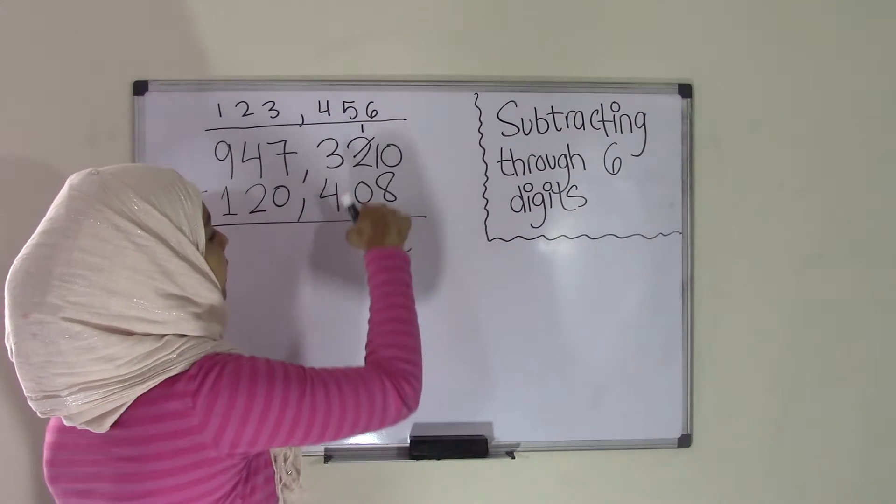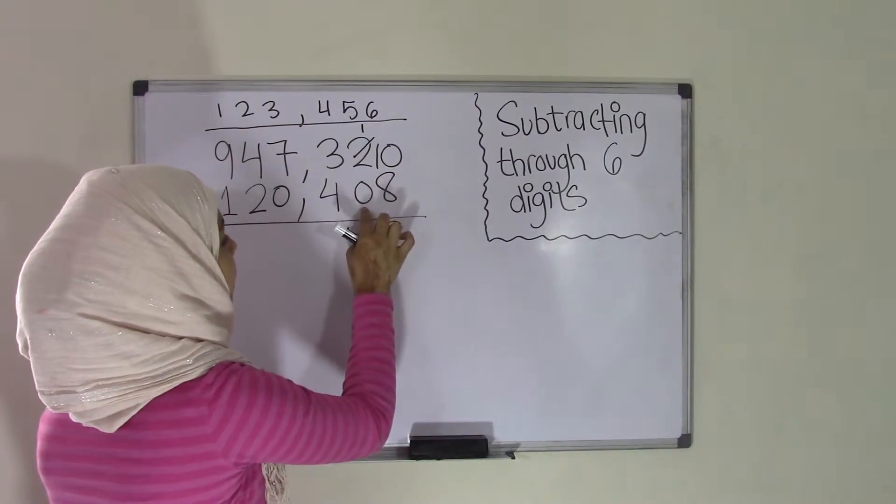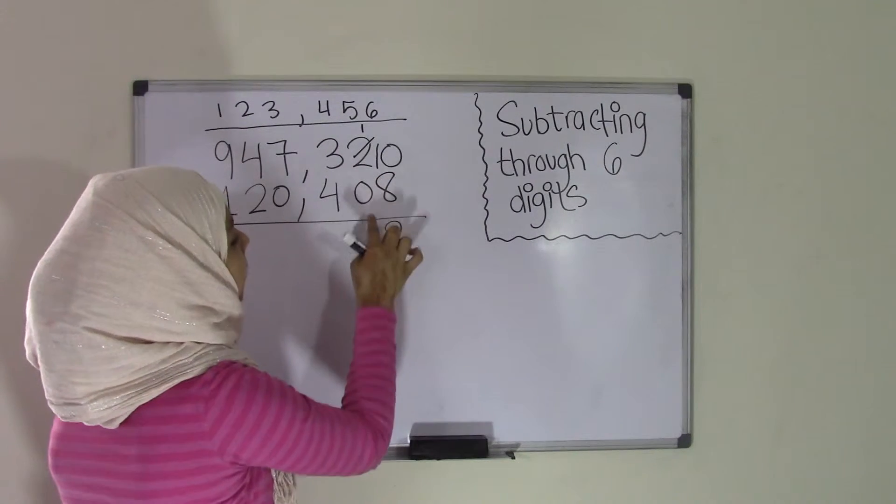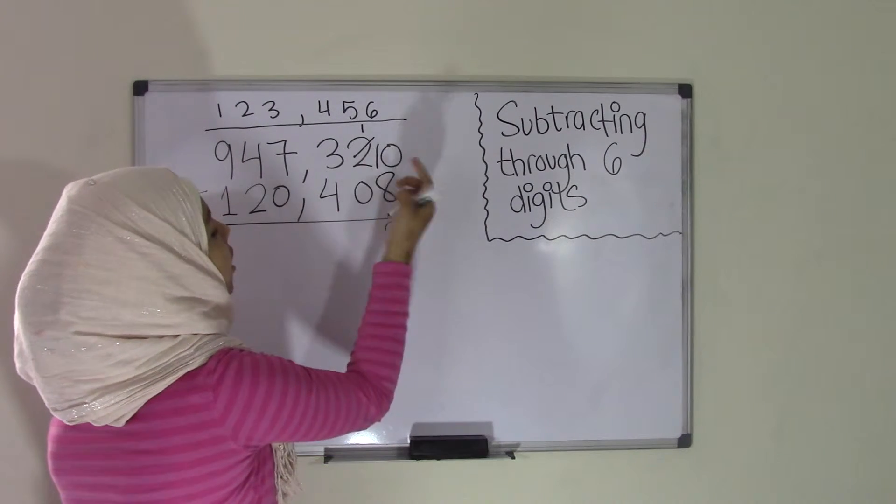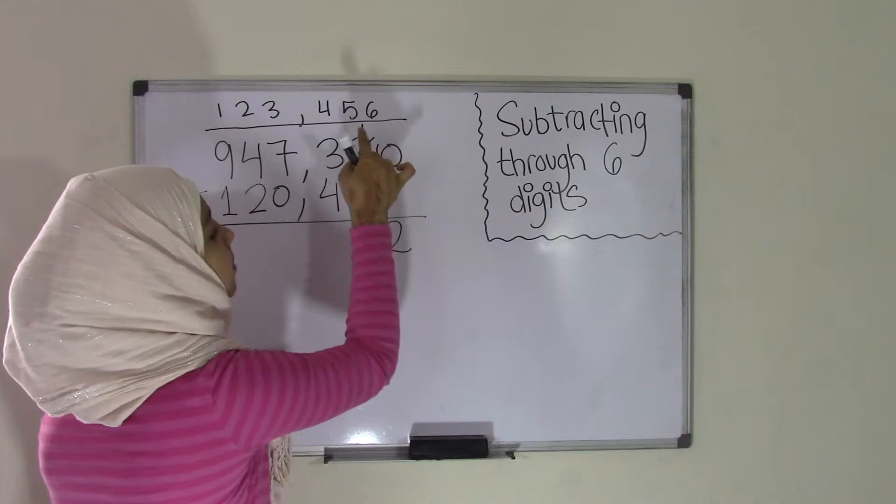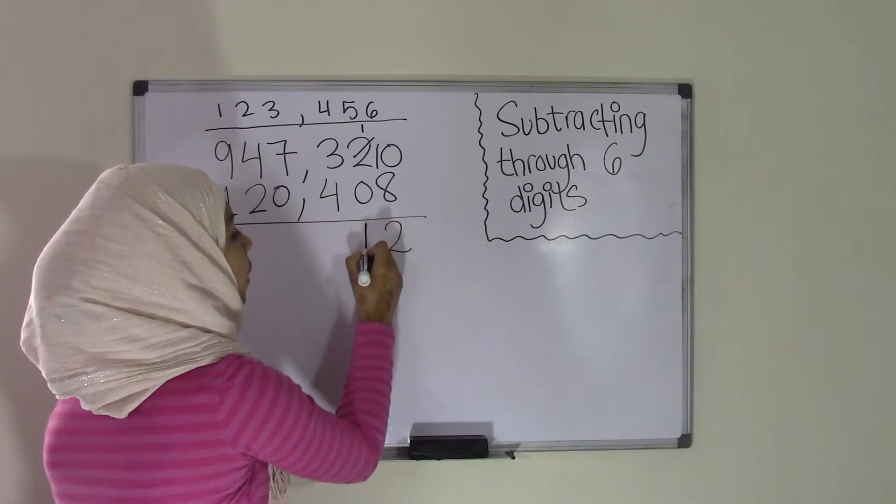Now we have our second problem from right to left, which is 1 minus 0. It would have been 2 minus 0, but we borrowed 1 for the 0 minus 8. So now this becomes a 1 minus 0 and we all know 1 minus 0 is 1.